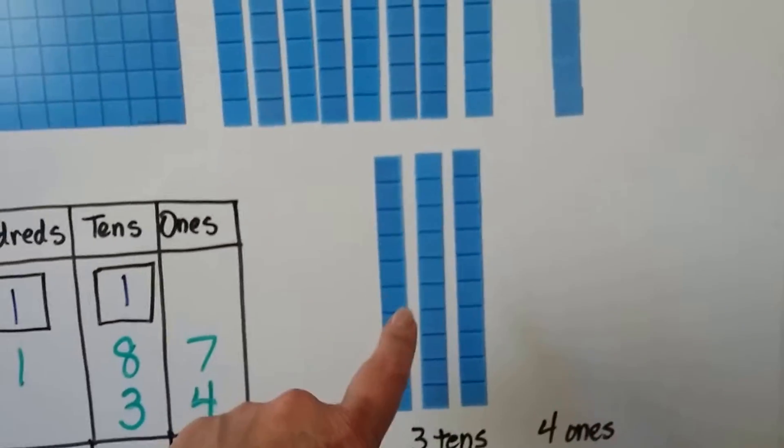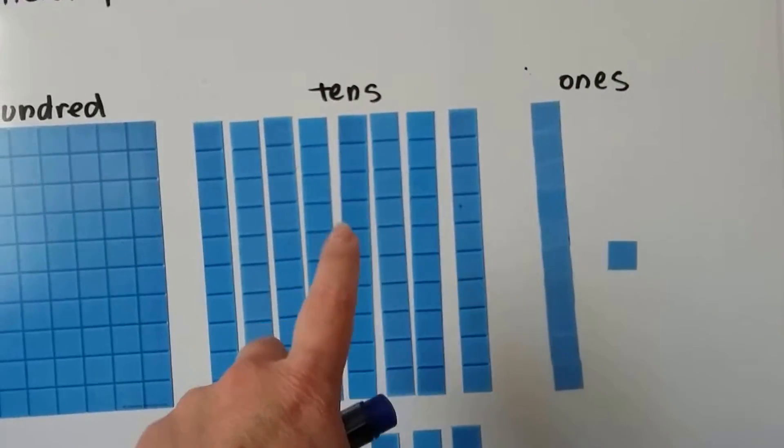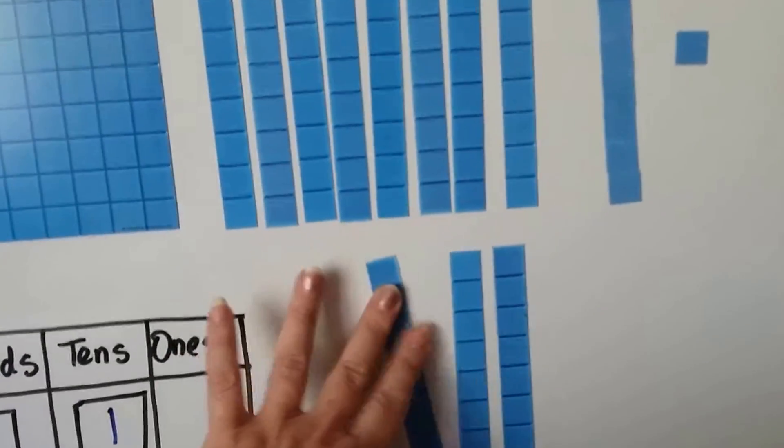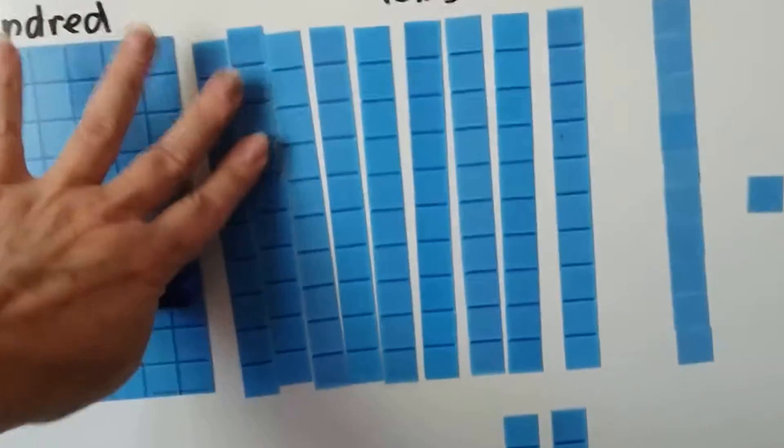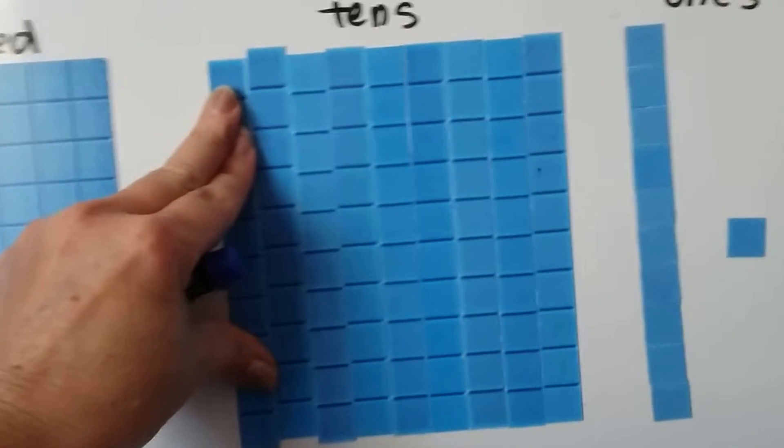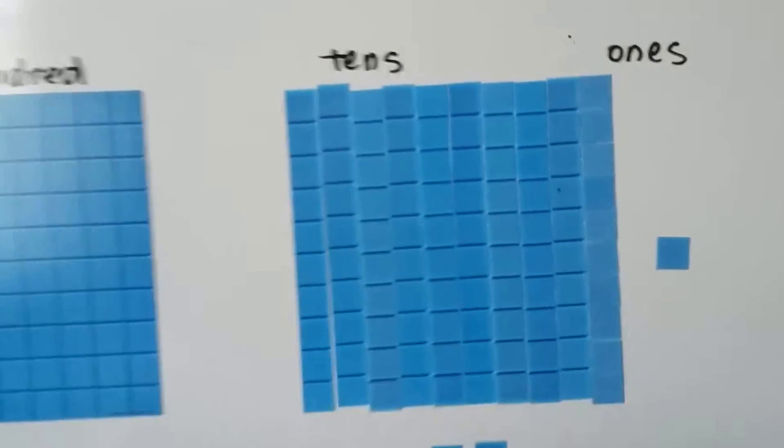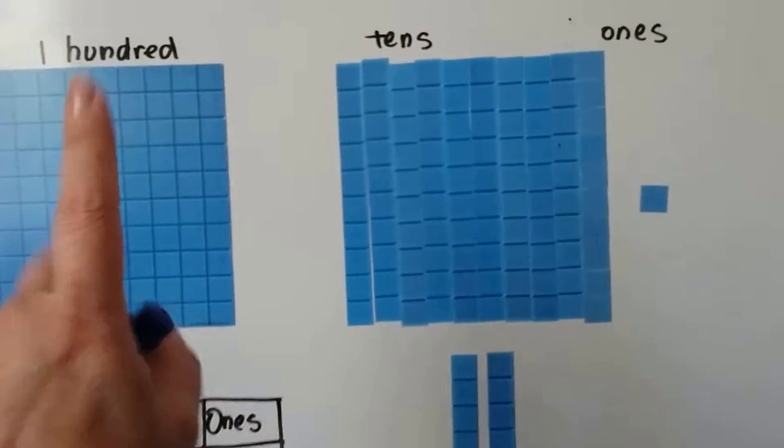Now we can take 1, 2, 3, 4, 5, 6, 7, 8, 9 tens and we can move one of them up here together. And instead of 9 tens, if I shove them all together, we have 10 tens, we have another 100.